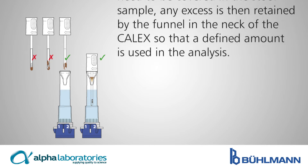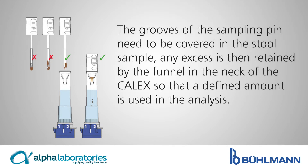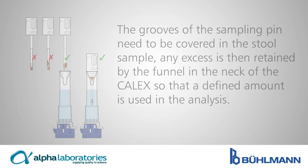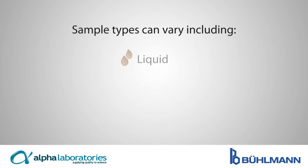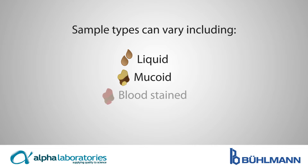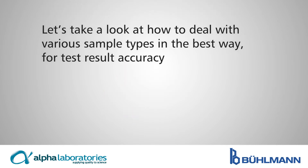The grooves of the sampling pin need to be covered in the stool sample. Any excess is then retained by the funnel in the neck of the calyx so that a defined amount is used in the analysis. Sample types can vary, including liquid, mucoid, blood-stained, and hard. Let's take a look at how to deal with various sample types in the best way for test accuracy.